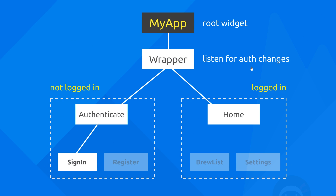Now we have our auth stream set up, we want to use it at the root of our application so that at the very top of the app we're tracking the user auth status. Is a user logged in or not? Inside the wrapper widget we can display either the authentication screen or the home screen. If the result from the auth change stream is null, they are logged out; if it's a valid user object, they are signed in.